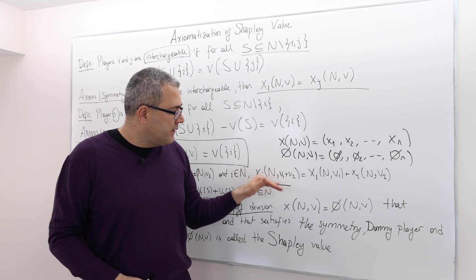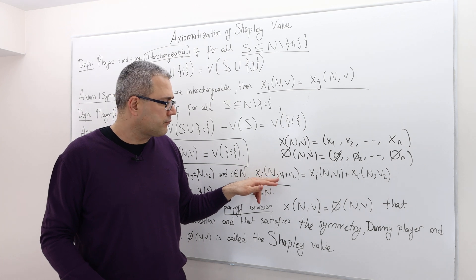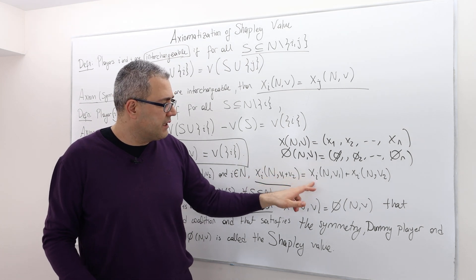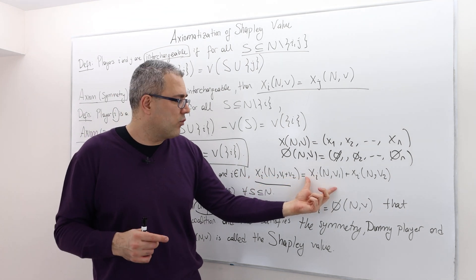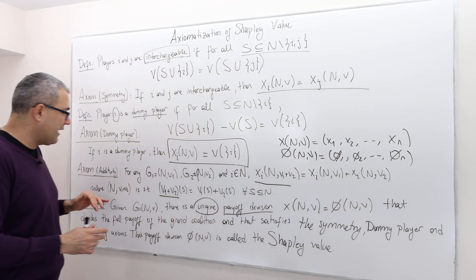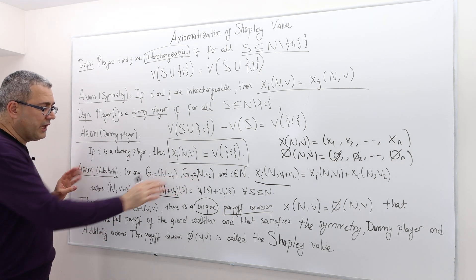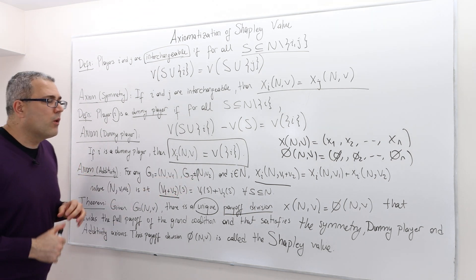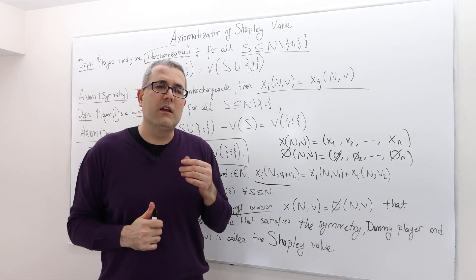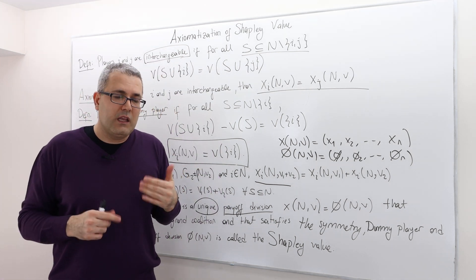So it says the player i's worth in this new game is equal to his worth, his payoff in game 1 plus his payoff in game 2. And again, this has to be true for any two such games, game 1 and game 2. Well, what is the intuition behind it? Well, it's a linearity.